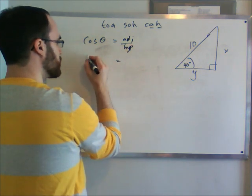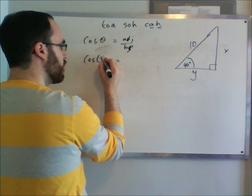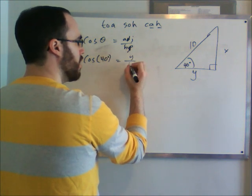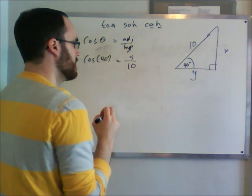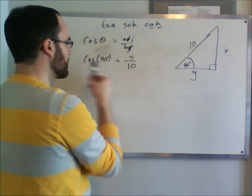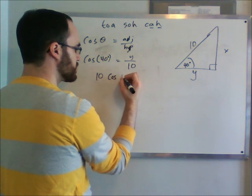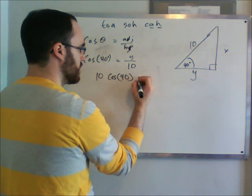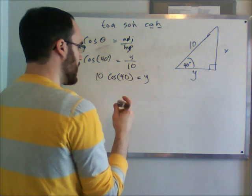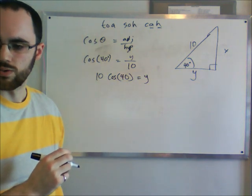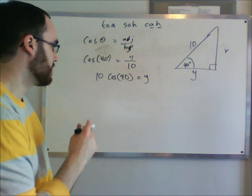So we know that cos theta equals adjacent over hypotenuse. So cos of 40 degrees equals adjacent, which is y, over hypotenuse, which is 10. So now we need to bring our 10 up to the other side to solve for y. So it's 10 cos 40 equals y. And we just plug this in on our calculator.